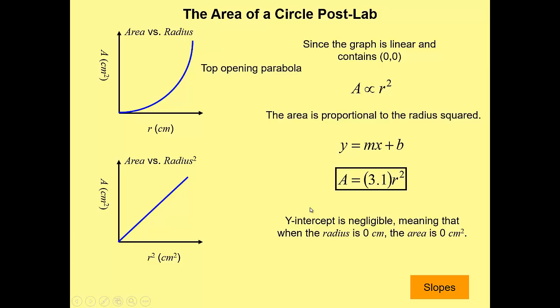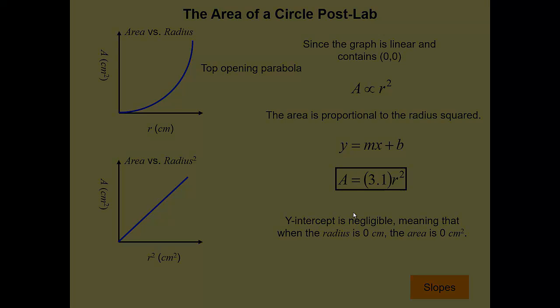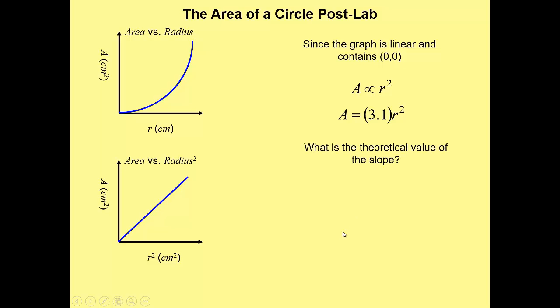So, there is our general math model. Well, kind of like our last circle lab, this slope's kind of important. Anybody see it? What should that slope actually be? What's the theoretical value of our slope?